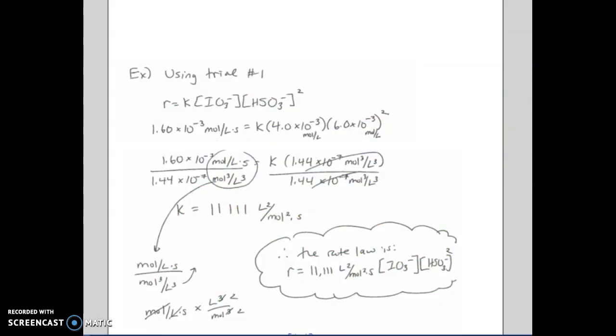So I happen to pick trial number one. You can see here, this is the rate from trial number one. These are the concentrations from trial number one. So we're solving for K. So we plug those all in. Now, keep in mind, I did a little on the side to show you here. The units for K will be different every single time, because the unit for K will depend on what your exponents are that are involved in this calculation. For example, this is moles per liter, but you're multiplying it by moles per liter squared.